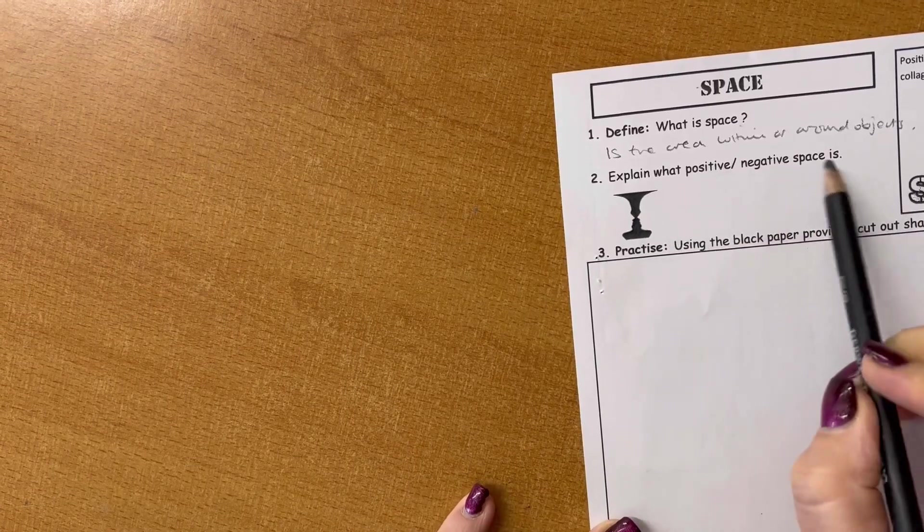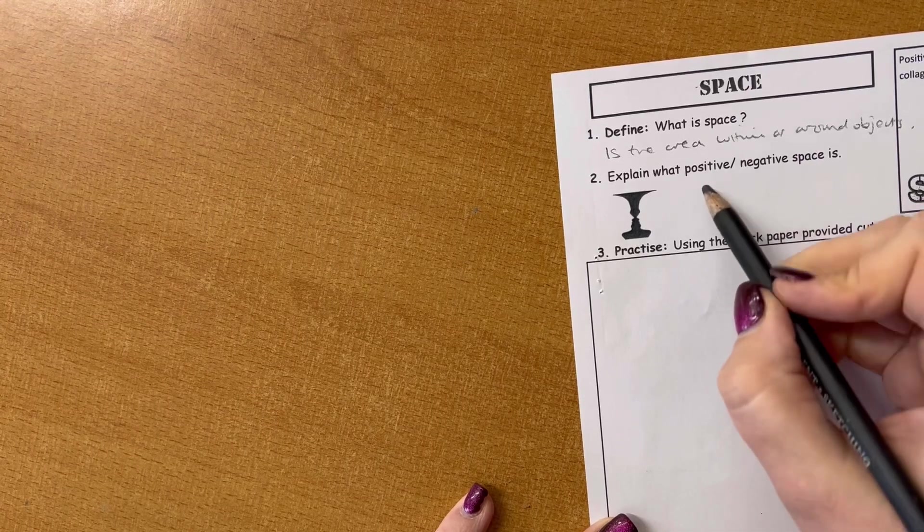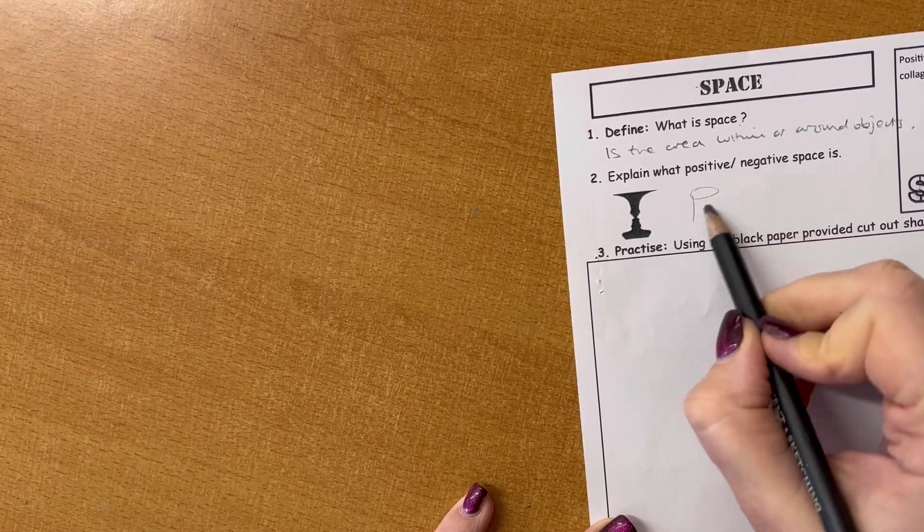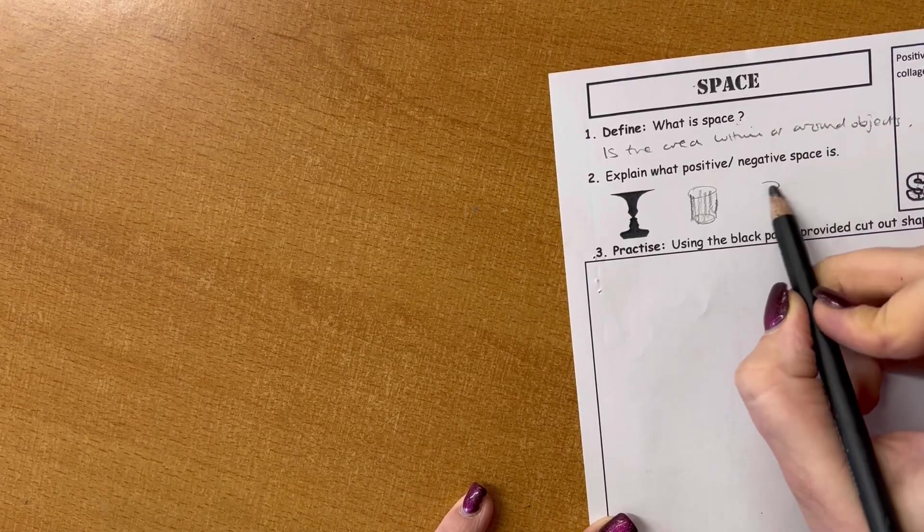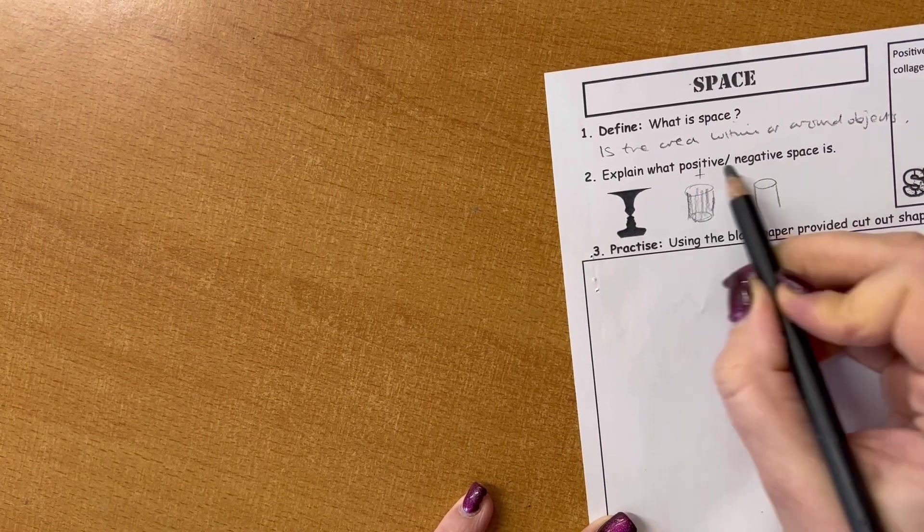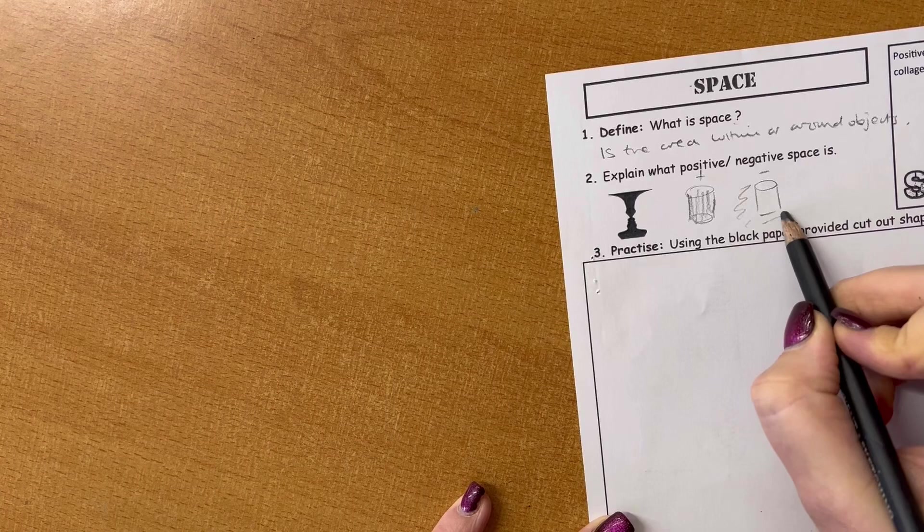Explain what positive and negative space is. So positive space is within an object, and negative space is around the object.